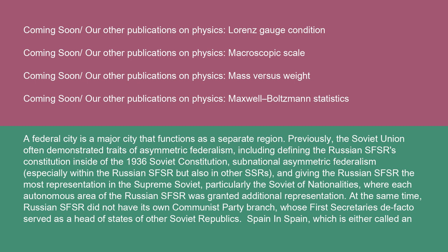Previously, the Soviet Union often demonstrated traits of asymmetric federalism, including defining the Russian SFSR's constitution inside of the 1936 Soviet Constitution, subnational asymmetric federalism especially within the Russian SFSR but also in other SSRs, and giving the Russian SFSR the most representation in the Supreme Soviet, particularly the Soviet of Nationalities, where each autonomous area of the Russian SFSR was granted additional representation. At the same time, the Russian SFSR did not have its own Communist Party branch, whose first secretaries de facto served as heads of state of other Soviet republics.